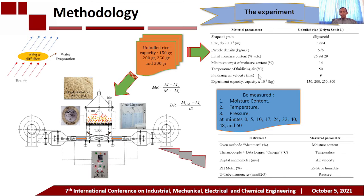The drying air velocity was 9 meters per second. During the experiment, measurements of water content, temperature, and pressure were carried out at 0, 5, 10, 17, 24, 32, 40, 48, and 60 minutes. Initial and final moisture content, temperature, and pressure were measured using a moisture oven, thermocouple, and data logger respectively. Using the moisture ratio (MR) and drying rate (DR) formulas, we obtained the MR and DR at each measurement interval.